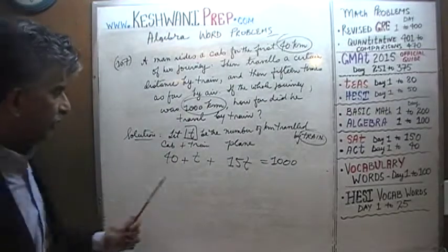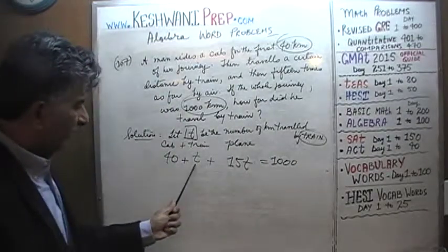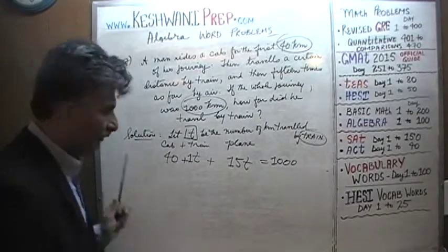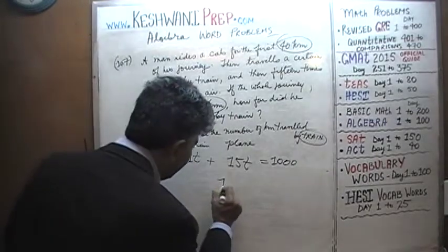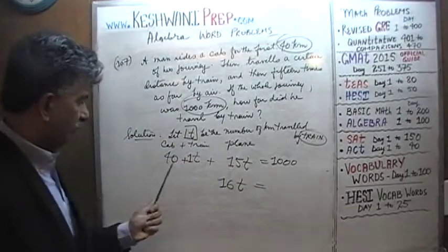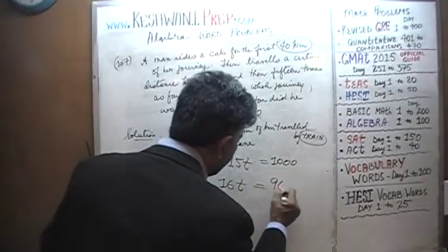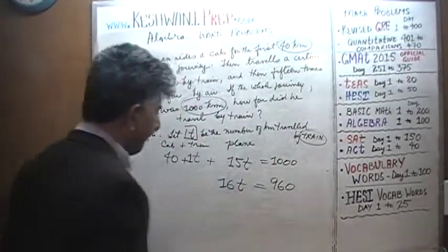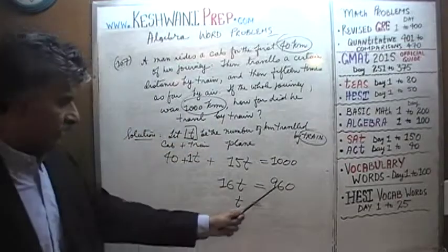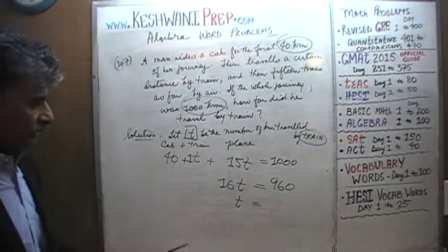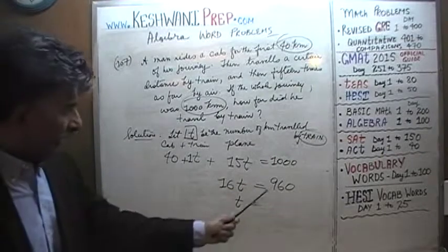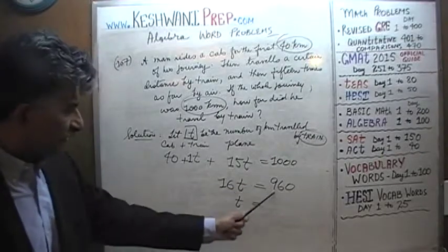Subtract 40 from both sides. We have 1T right here, so 1T plus 15T is going to be 16T, which equals 1000 minus 40, which is 960. Therefore T equals 960 divided by 16. How many 16s does 96 have?